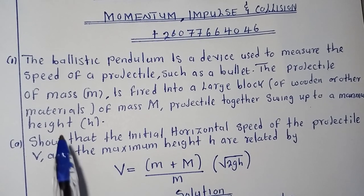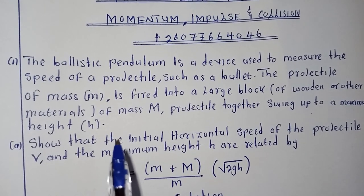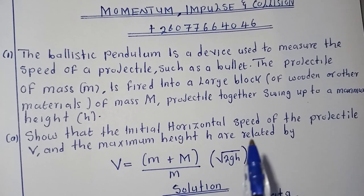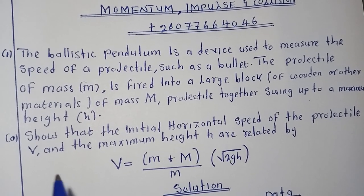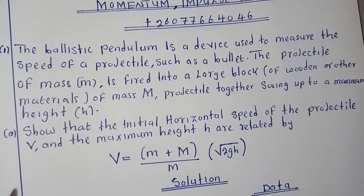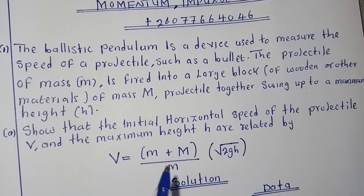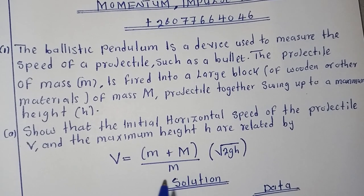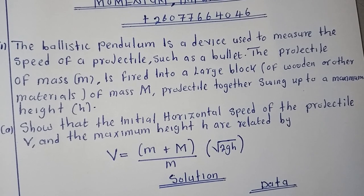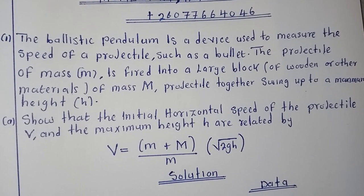The projectile of mass m is fired into a large block of wooden or other materials of mass M. The projectile together swings up to a maximum height h. Show that the initial horizontal speed of the projectile V and the maximum height are related by V equals m plus M over m multiplied by the square root of 2gh.